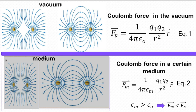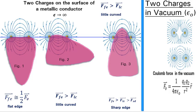If we put the two charges on the surface of a metallic conductor which has an irregular shape, the force between the two charges depends on whether the surface is flat or curved. Assume that we put the two charges at the same distance in figure 1, figure 2, and figure 3.